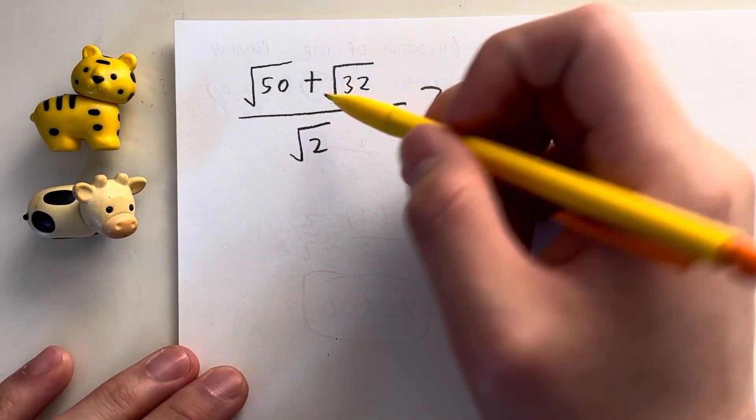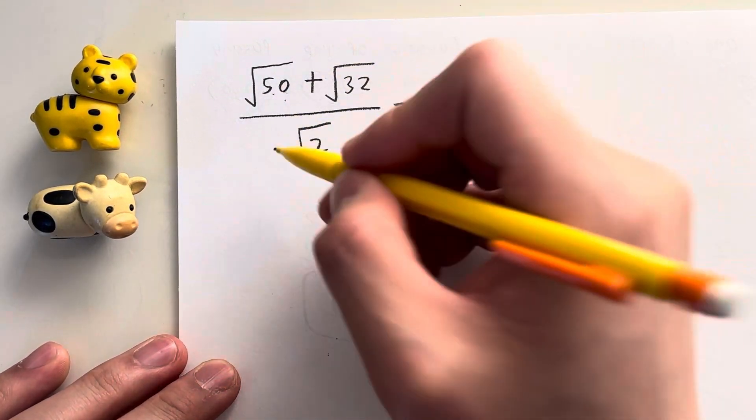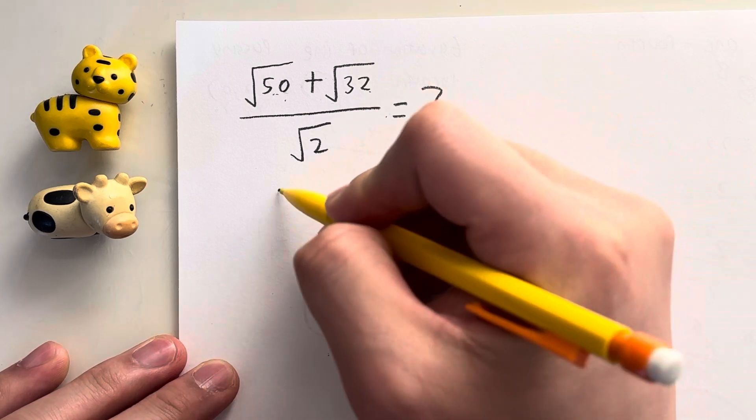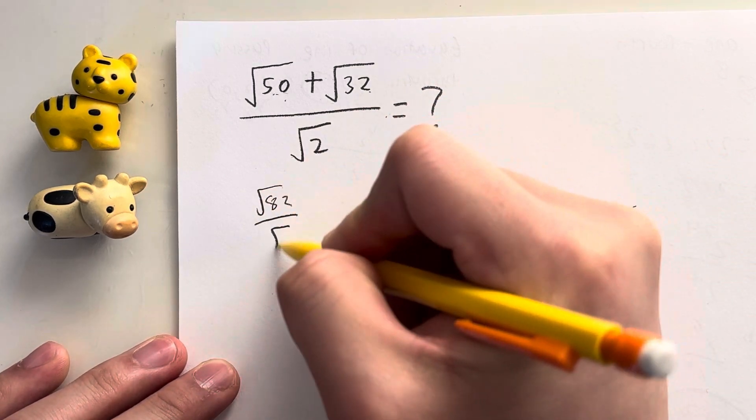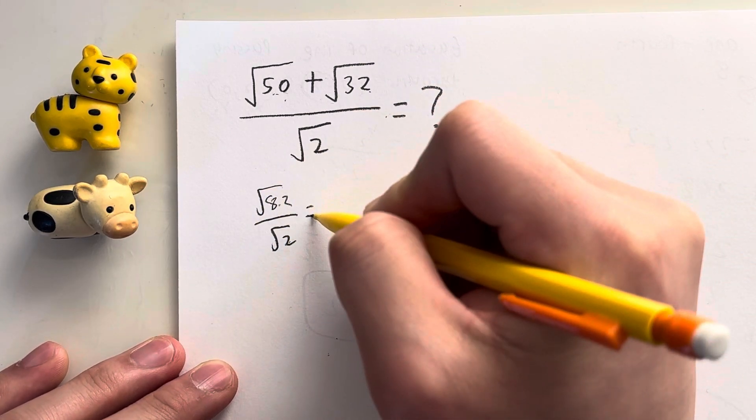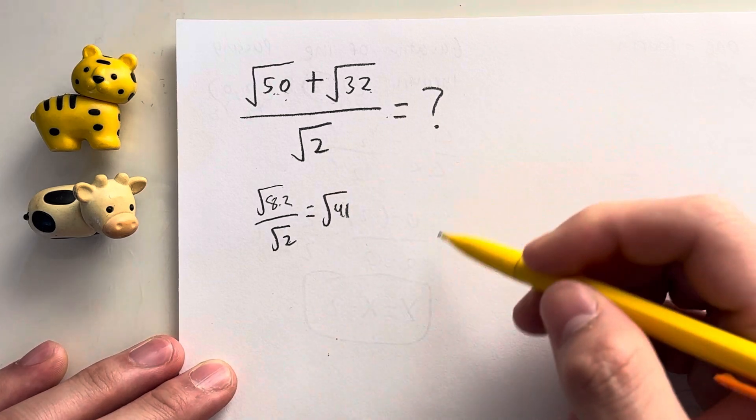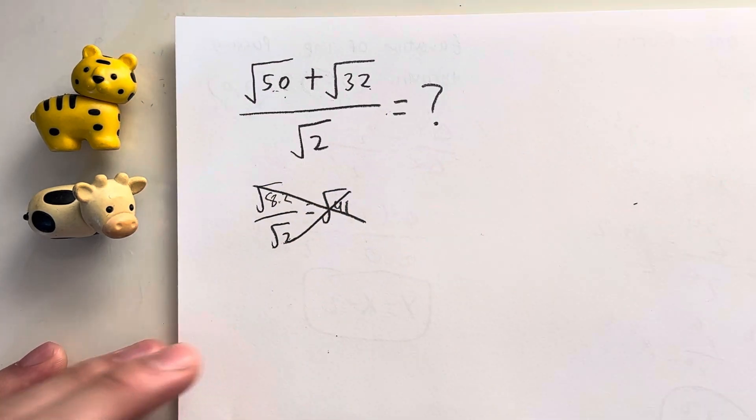Okay, so let me show you the wrong way to do this question. Some people might just decide to add them, 50 plus 32, which is equal to 82, then divide by square root of 2. 82 divided by 2 is 41, so your answer is the square root of 41, right? No, that is completely wrong.